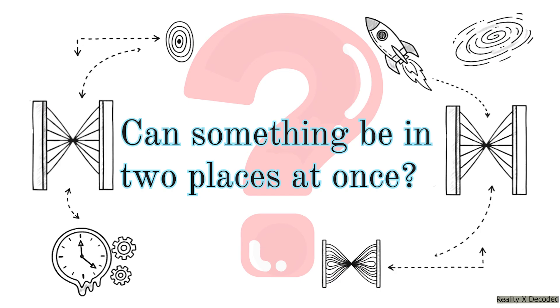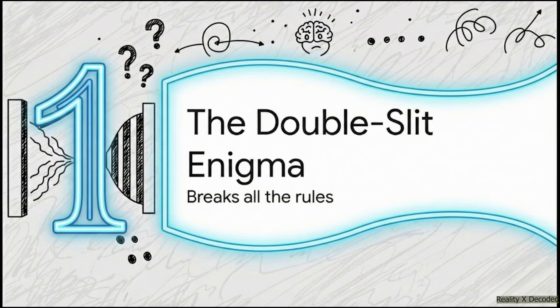And the answer the universe gives us? Well, it's stranger than you can possibly imagine. And this is where the double-slit experiment comes into play. It's so simple you could almost draw it on a napkin. But for over a century, every time we run it, it spits out results that just completely shatter our common-sense ideas about how the world is supposed to work.